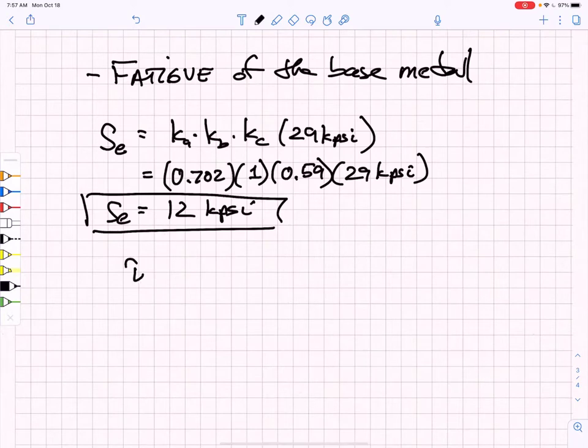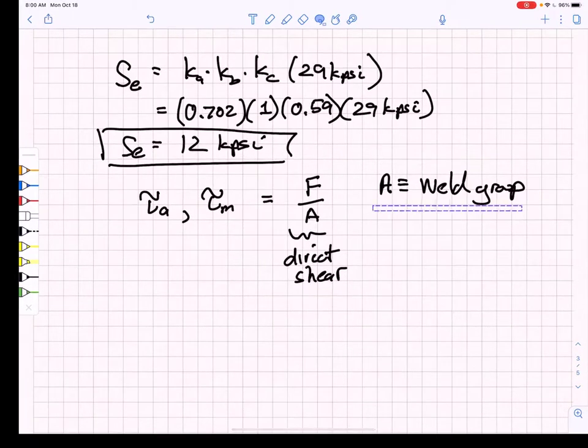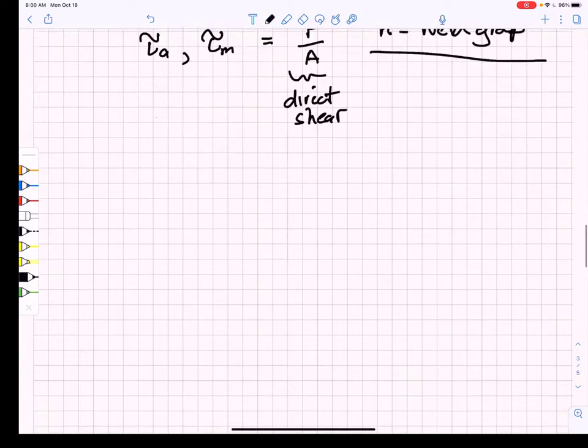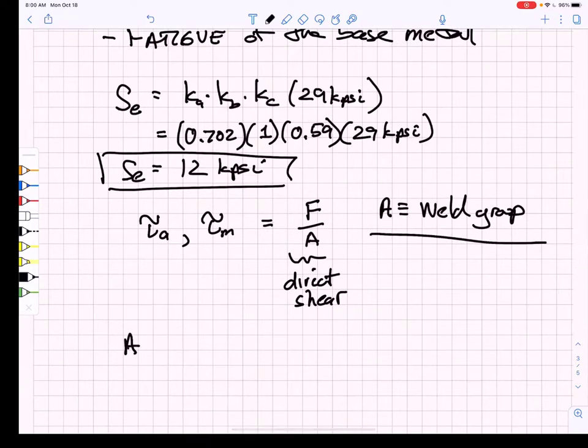Now what we have to do is figure out what my stress amplitude and my mean stress happen to be. I know that they're both equal to each other, and I know that there is going to be a direct shear on the weldment. I'm just applying tensile load, so this becomes a slightly easier problem. We have to find the cross-sectional area for our particular weld group.